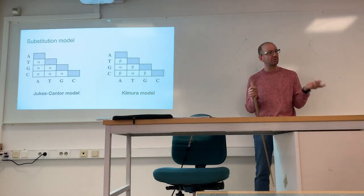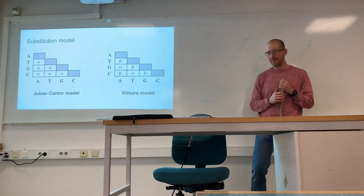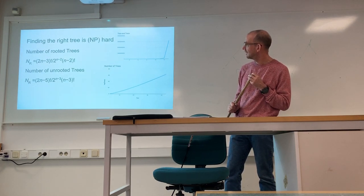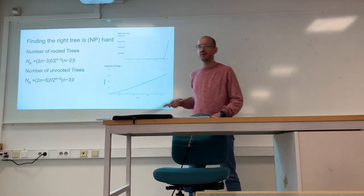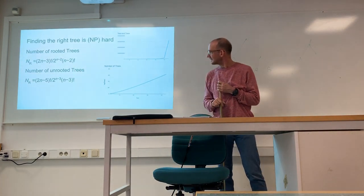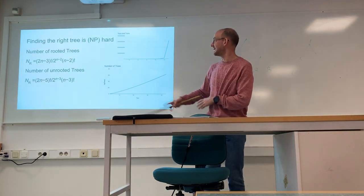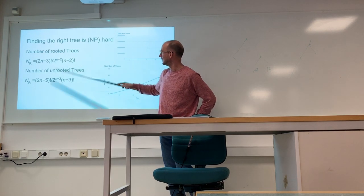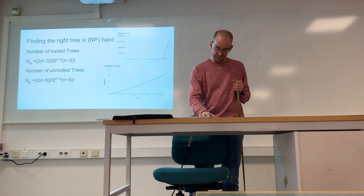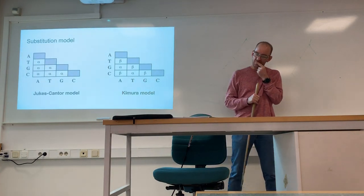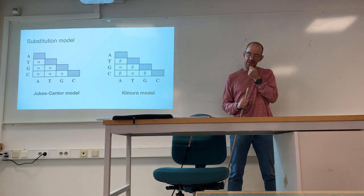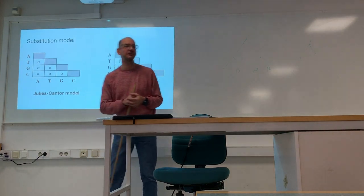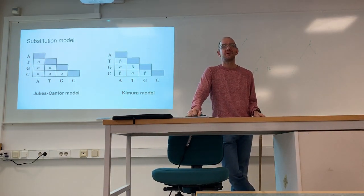There are a few things you need to think about when building a tree. There's a question from the audience about the tree number formula — specifically whether the n-minus-2 factorial and n-minus-3 factorial are in the denominator. Yes, they are in the denominator — it should be 2n-3 factorial divided by 2 to the n-minus-2 factorial. To make a tree from sequence data, the first thing you need is alignment — specifically multiple sequence alignment.